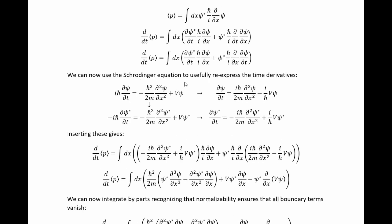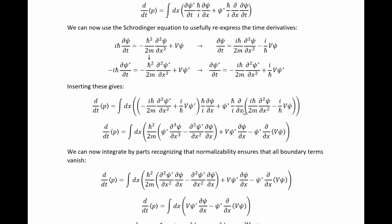We can now use the Schrodinger equation to usefully re-express the time derivatives. So this is the Schrodinger equation. We can complex conjugate it to get this and then divide by i h-bar in this case and minus i h-bar in this case to arrive at these values for the time derivatives of the wave function and its complex conjugate. We can then insert that,